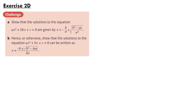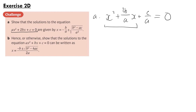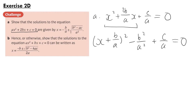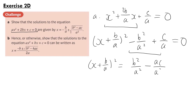The first thing we can do is divide both sides by a, giving x² + (2b/a)x + c/a = 0. Now we complete the square: we get (x + b/a)² - b²/a² + c/a = 0. Moving terms to the right, we get (x + b/a)² = b²/a² - c/a, which we can write as (b² - ac)/a², multiplying top and bottom by a. So x + b/a equals plus or minus the square root of (b² - ac)/a².